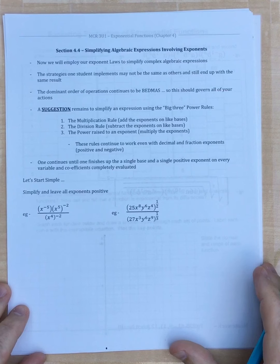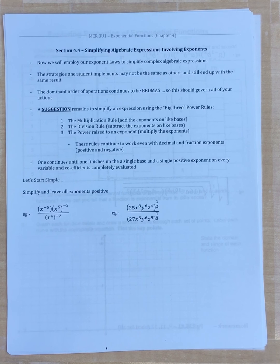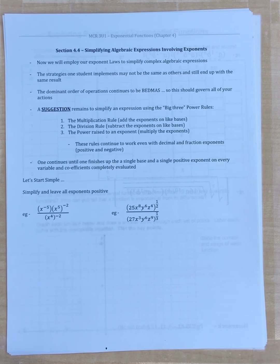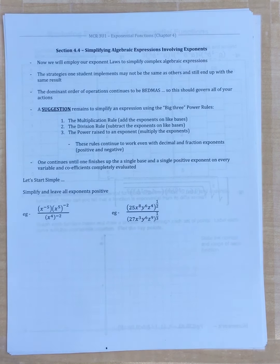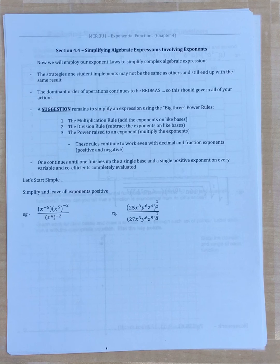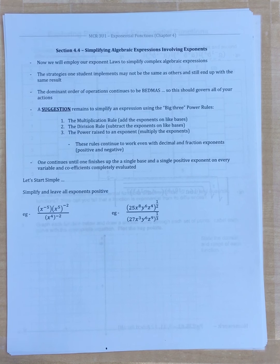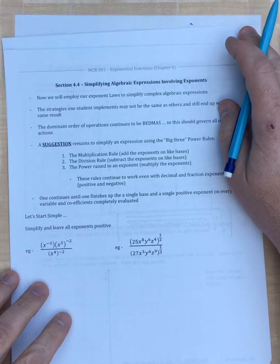We spent the last couple of lessons going over the properties of exponents and rational exponents, and now we're getting to the final application: simplifying algebraic expressions. We'll be applying fraction exponents, negative exponents, and so on. Some of this will be review, and some is another opportunity to understand factoring and canceling ideas when we do division.